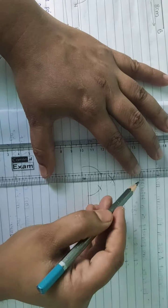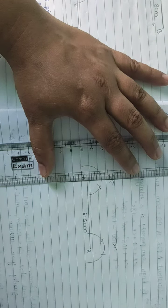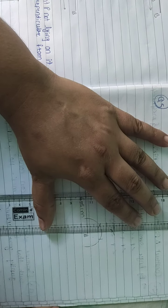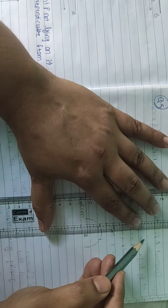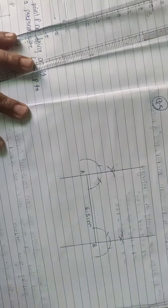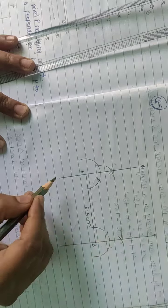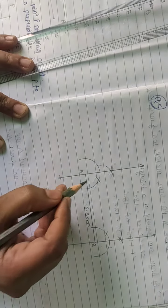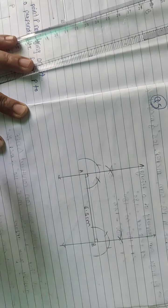So now join this and this side also. Keep it straight, properly on the points. Now these are the two perpendicular lines forming 90-degree angles.